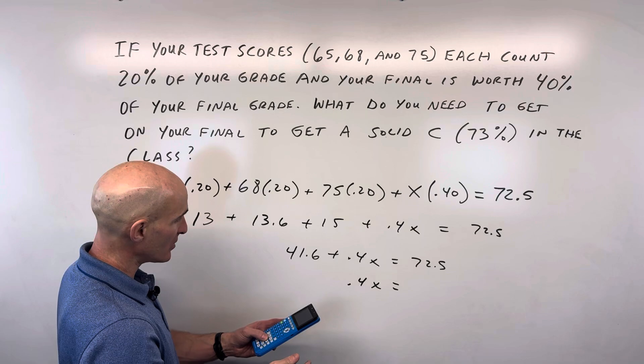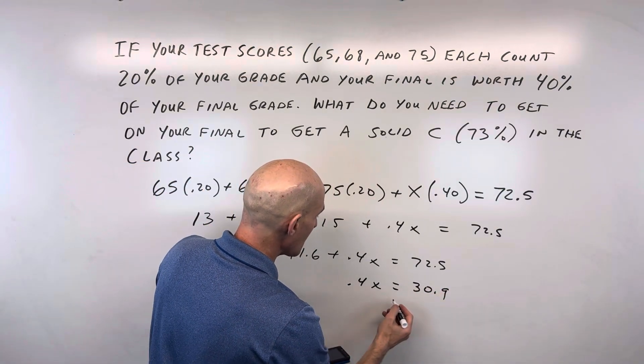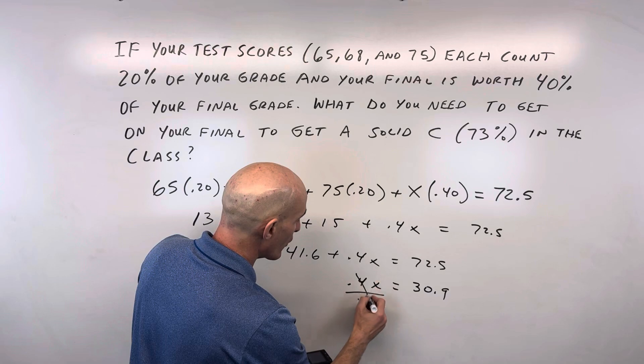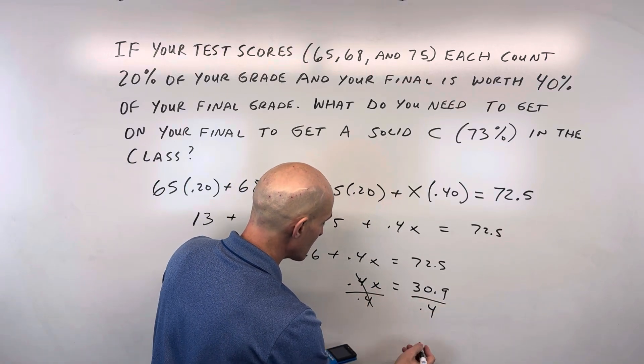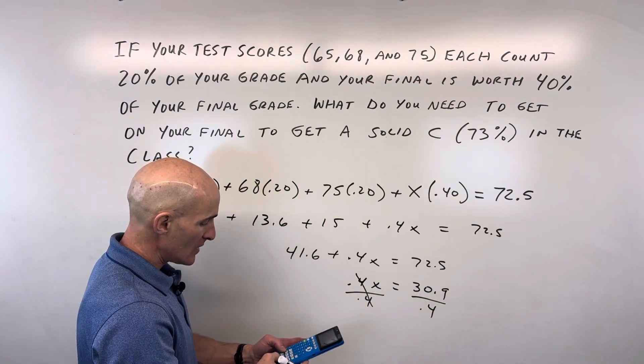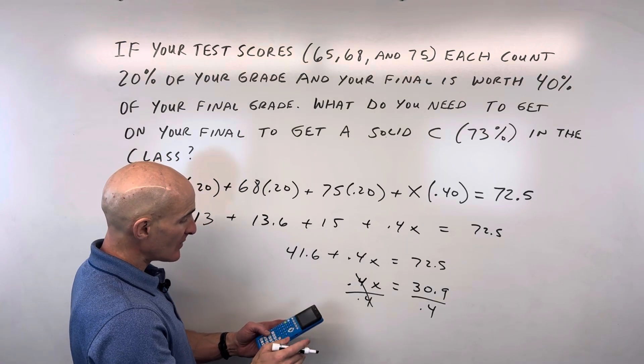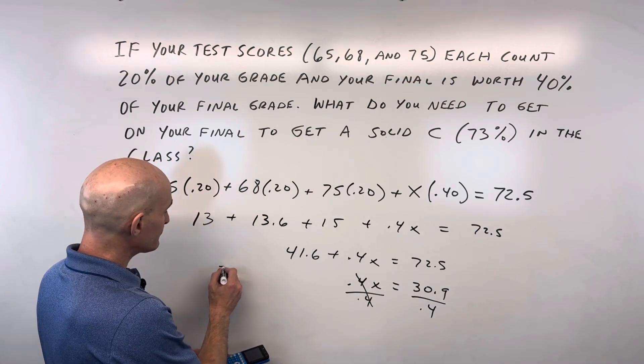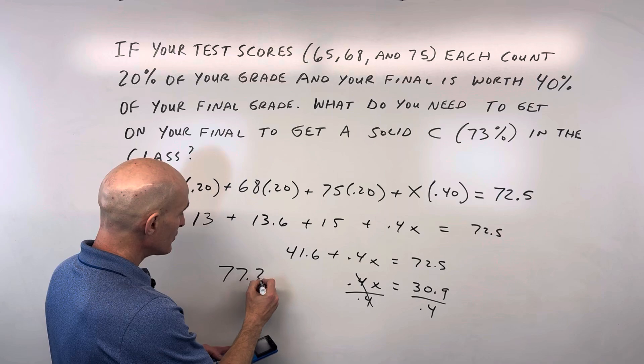Just basic algebra here. So 30.9, and we're going to divide both sides by 0.4 to figure out what X is. That's what we need to get on our final. Let's see what this comes out to. It's coming out to 77.25.